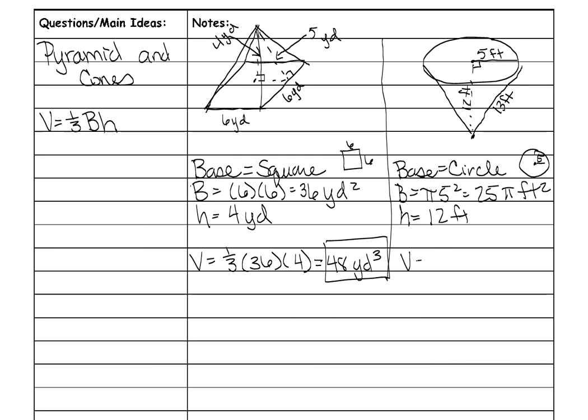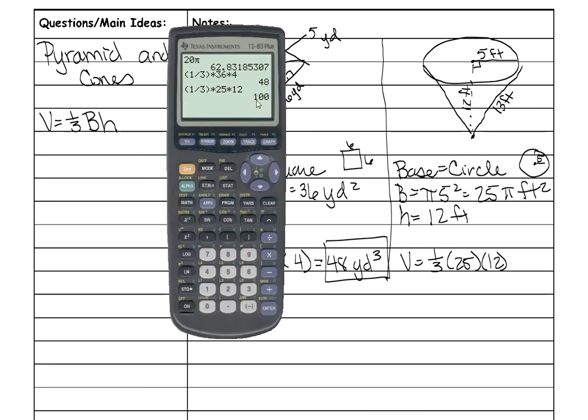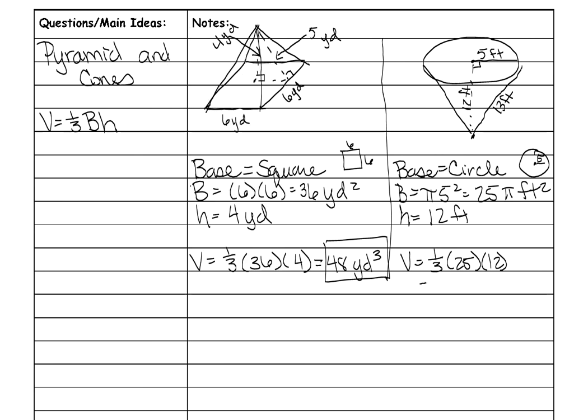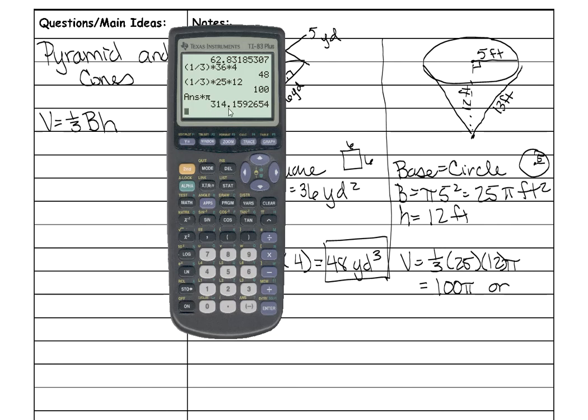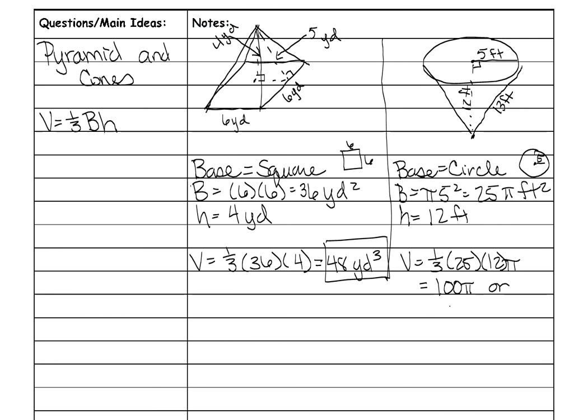So my volume is 1 3rd times 25 times 12. When you put it all in your calculator, it equals 100 pi. Don't forget your pi. I forgot pi. So it's 100 pi or 314.16, so 314.16 feet cubed is the volume for my cone.